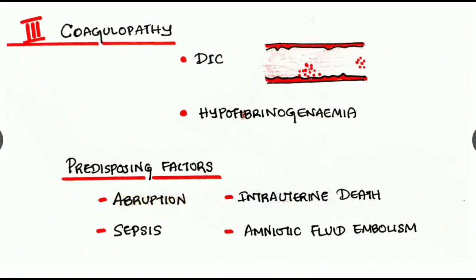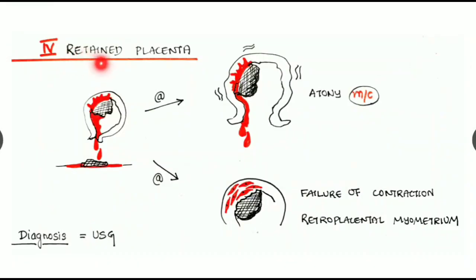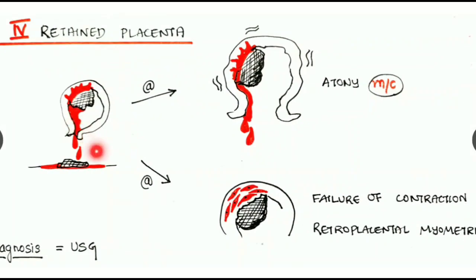The predisposing factors for coagulopathy are abruption, sepsis, intrauterine death, and amniotic fluid embolism. The fourth type is retained placenta, where the placental fragments are retained inside the uterus and this causes heavy hemorrhage.